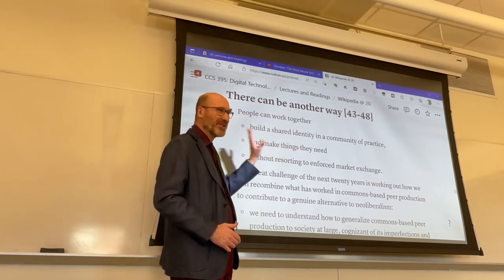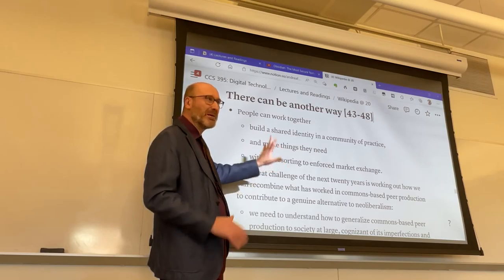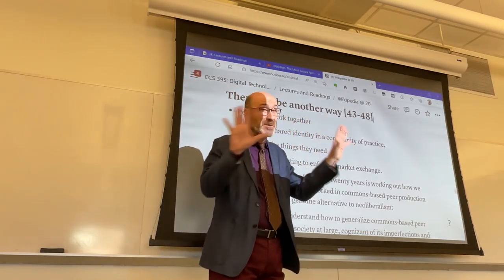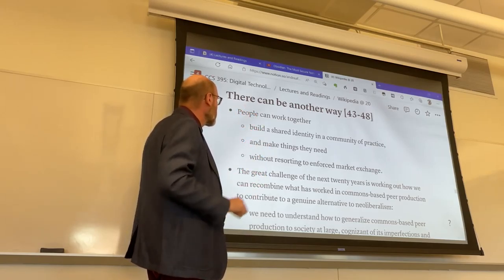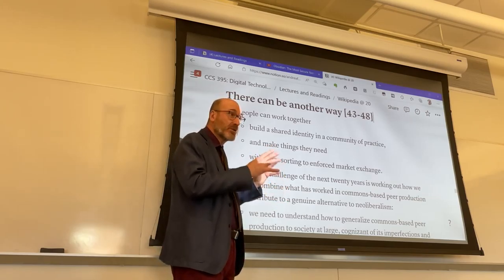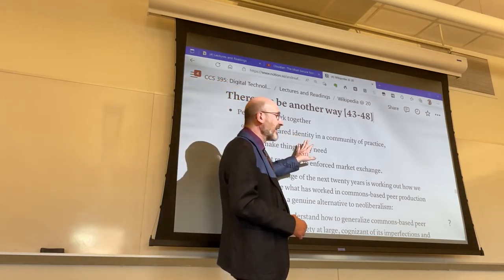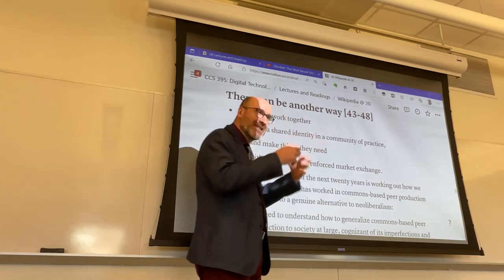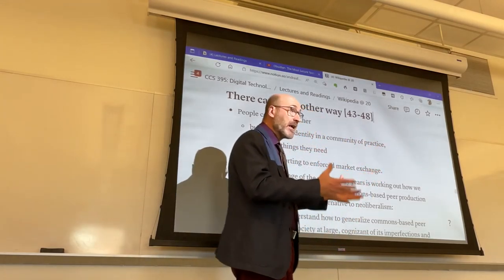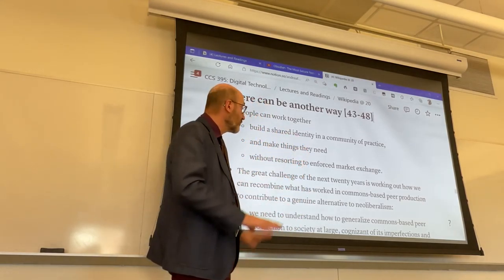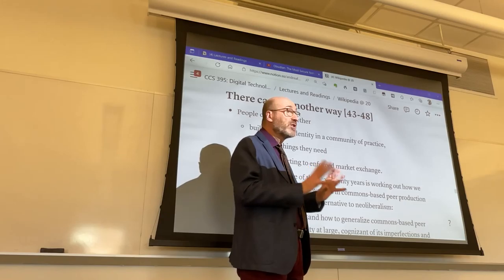What is the manifesto view of Wikipedia? Wikipedia is supposed to demonstrate that people can work together, build a shared identity — meaning an identity acknowledged by others in a community of practice, a community that engages in some kind of productive activity related to knowledge. Another key term in this chapter is utility: Wikipedia provides a service, and that's the idea behind the term utility in this context.